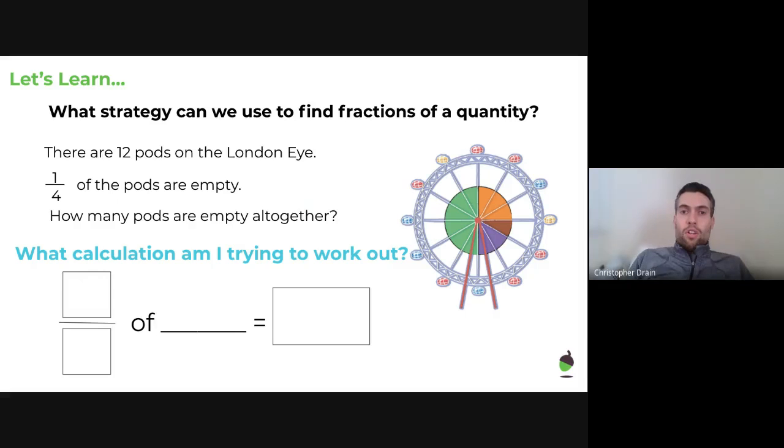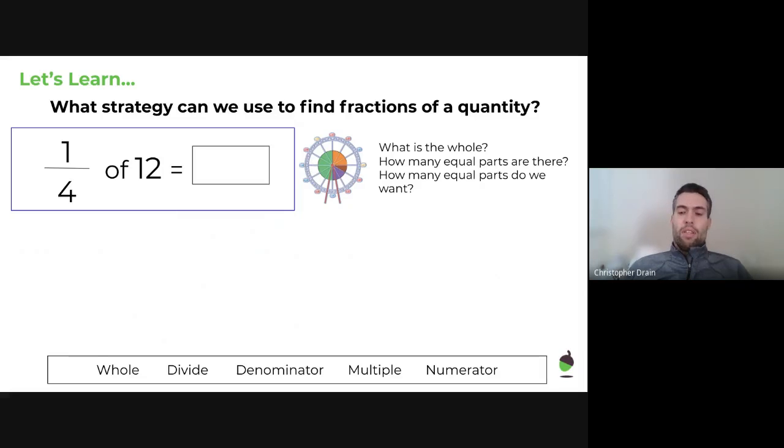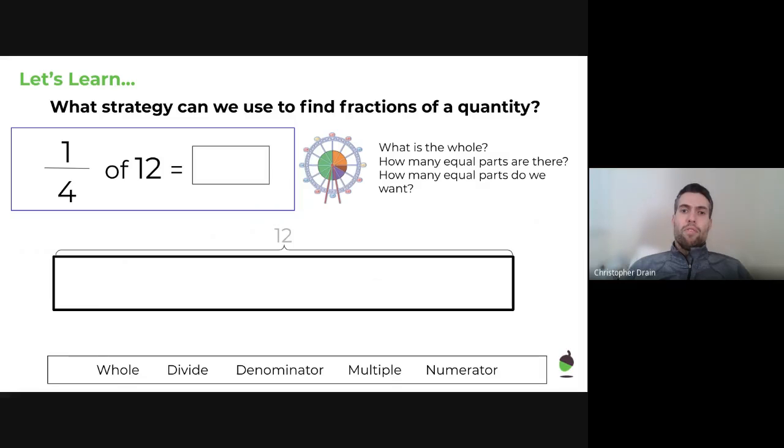Right, let's learn. What strategy can we use to find fractions of a quantity? In this first question here, there are 12 pods in the London Eye. One quarter of the pods are empty. How many pods are empty altogether? What calculation am I trying to work out? The calculation from this information is that we have 12 pods altogether, so we're trying to find a fraction of 12. The fraction we're looking for is a quarter, so we would be looking for a quarter of 12. That, of course, is a unit fraction. We will start with that though, so that you can see what the strategy is like. So, we're going to use a bar modeling strategy here. The first thing that we would do is get a bar or a rectangle. We would split it up into even pieces. But when we split it up, it all has to come to 12. So, we want to split it into four even pieces because we're looking for a quarter of 12.